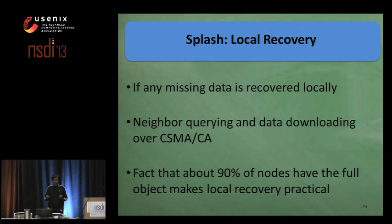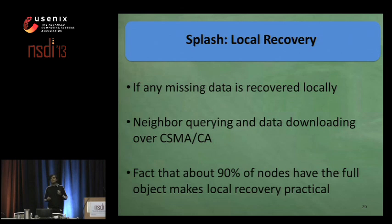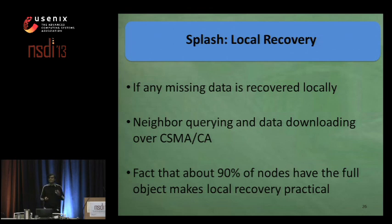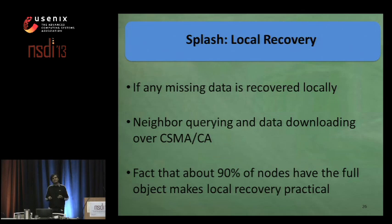Despite all our techniques, a few nodes can still have a few missing packets. Such missing data is recovered locally using a simple procedure that involves neighbor querying and data downloading over conventional CSMA/CA. The fact that our first three rounds leave about 90% of the nodes with the full data object makes local recovery practical.